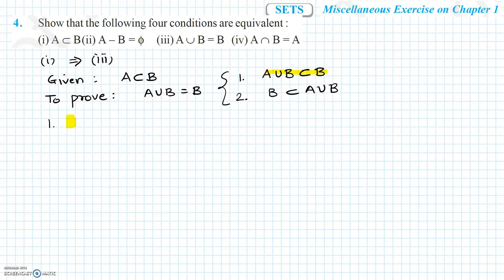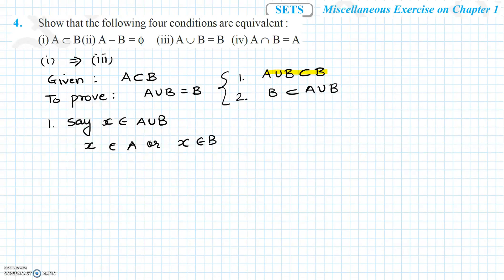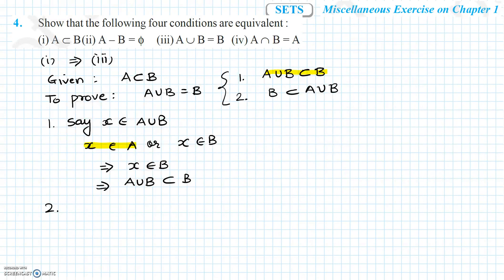Assume some x that belongs to A union B. Because x belongs to A union B, x belongs to A or x belongs to B. In both cases, x will end up belonging to B: if x belongs to A, then because A is a subset of B, x will also belong to B; and if x belongs to B, then it belongs to B. So from here we can conclude that x belongs to B, which implies A union B is a subset of B.